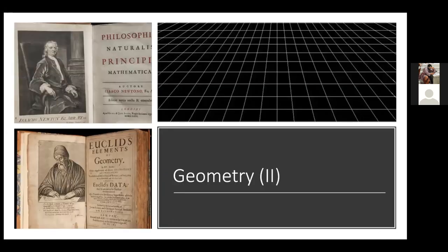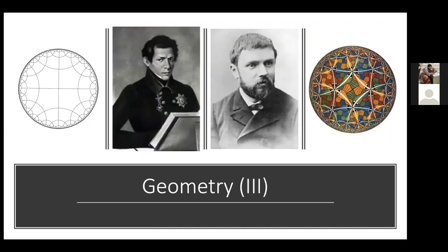Euclid was the first mathematician to have an axiomatic system of geometry. And for almost 2,000 years after him, Newton basically built classical mechanics on the foundation of Euclidean geometry. But later on, geometry is not objective — it is an axiomatic system, and you can invent new axiomatic systems as long as they are consistent. In the late 19th and early 20th century, Lobachevsky and Henri Poincaré invented new systems of geometry that are somehow consistent and very powerful.